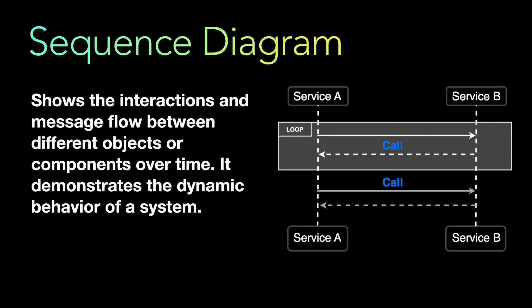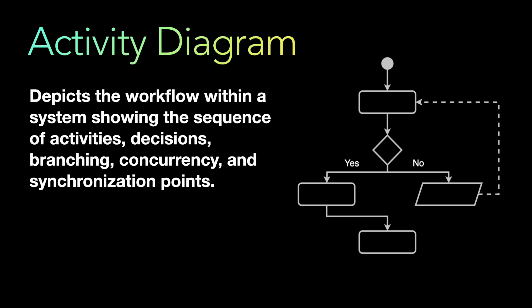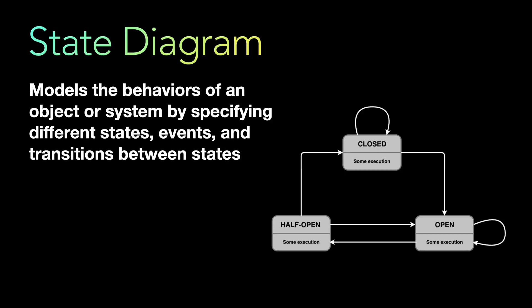The next one is the activity diagram. An activity diagram is like a flow diagram or flowchart. It depicts the workflow within a system, showing the sequence of activities, decisions, branching, concurrency, and synchronization points. It starts from one point and ends at another, with different branching and decisions taken throughout that entire activity.